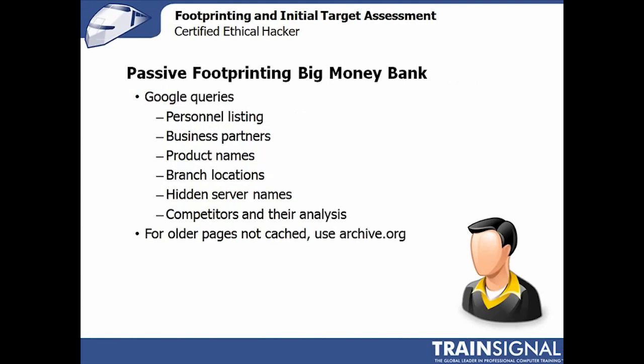The next portion of passive footprinting is search engine queries — Google or your search engine of choice. You're looking up things like personnel listings, business partners, and product names. Starting with a query like "Big Money Bank" in quotes, or searching with an at-symbol to find email names and people names. This is still passive footprinting — we're not touching Big Money Bank's website directly, only cached versions or other pages that point to it, so we don't set off any alarms.